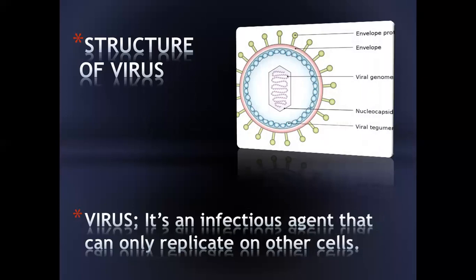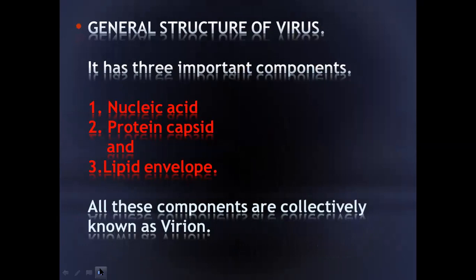As you can see in this picture, the virus contains three important components: the centrally placed nucleic acid, or the viral genome; the protein capsid covering it; and the outermost layer, which is the viral envelope, known as the lipid envelope. All three components — the nucleic acid, the protein capsid, and the lipid envelope — form an infectious agent with the ability to infect the host cell it enters.